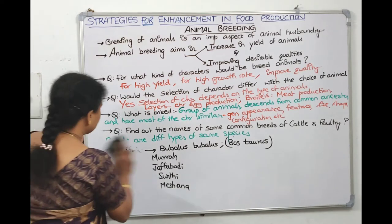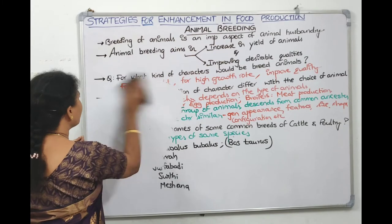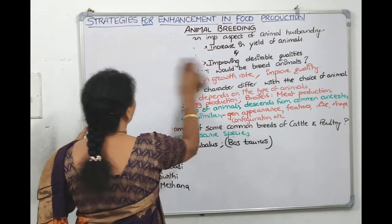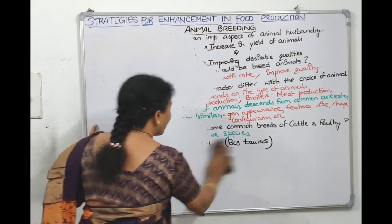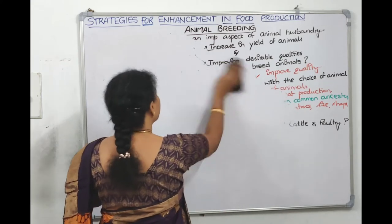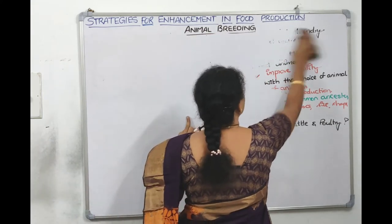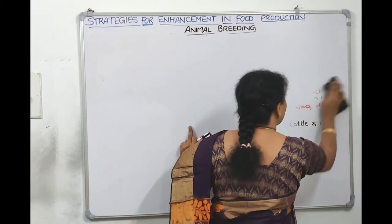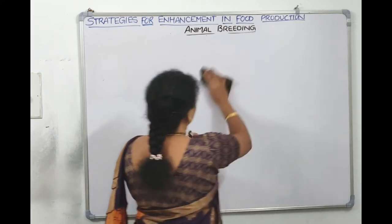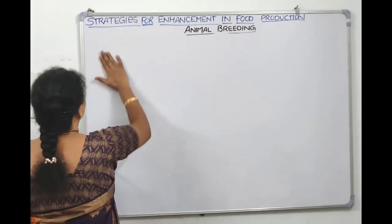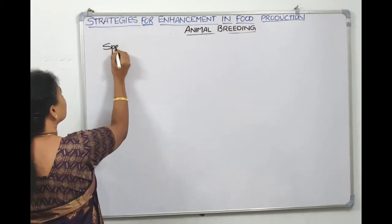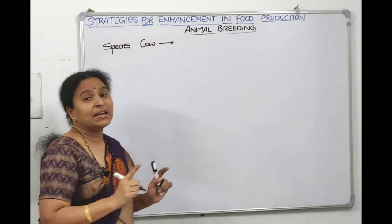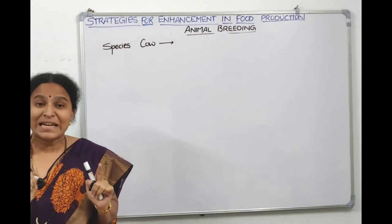Now we discuss cow breeds. The scientific name of cow is Bos indicus. If it is an Indian cow, it is called an indigenous or desi cow; if it comes from another place, it is called an exotic breed.